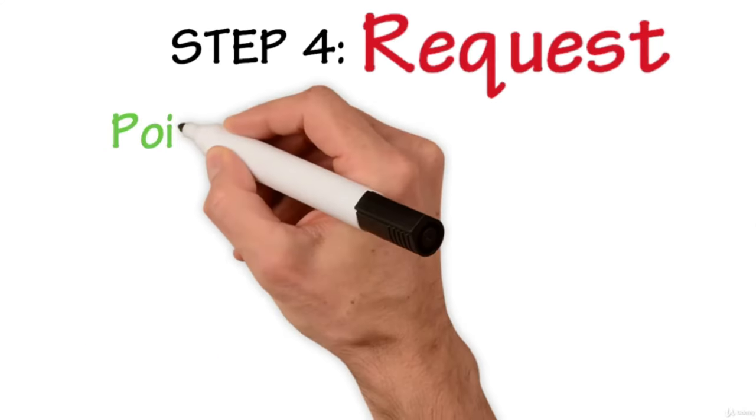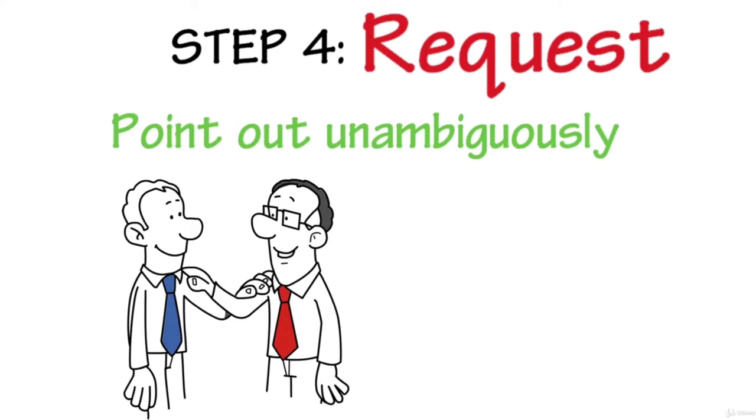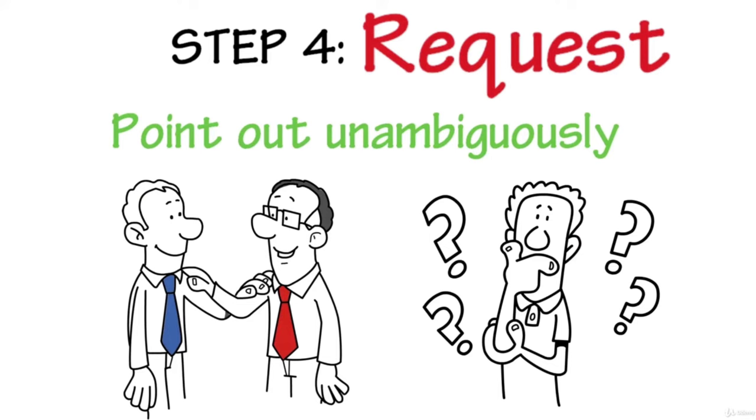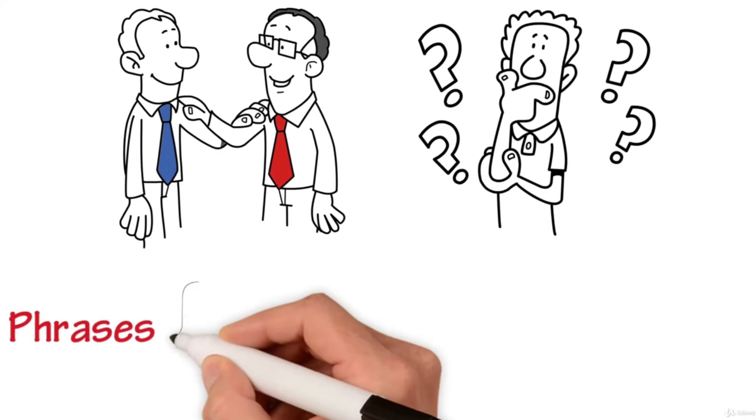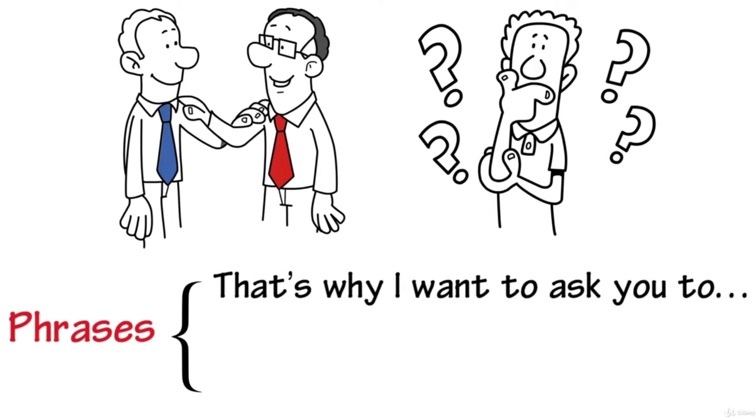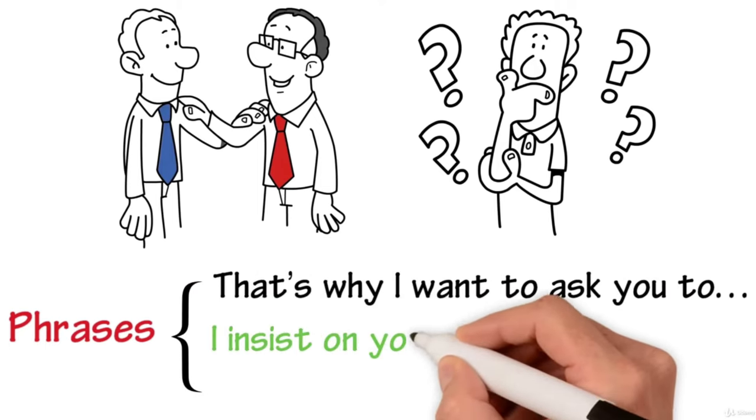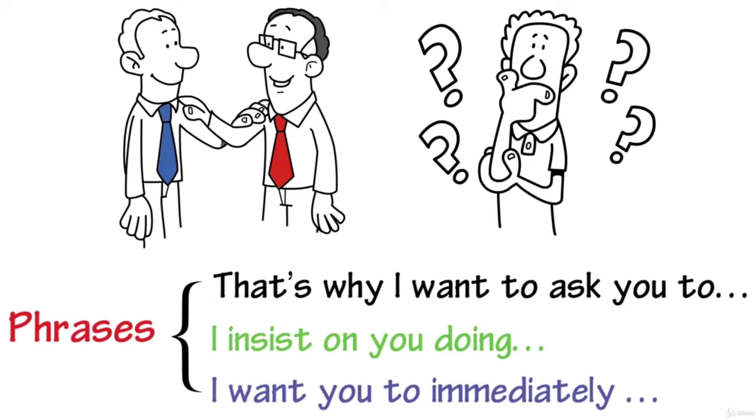Step four is your request. Point out unambiguously what you expect from the other person. What are your concrete desires or suggestions in this context? End the conversation with phrases such as, that's why I want to ask you to, or I insist on you doing, or I want you to immediately, and so on and so forth.